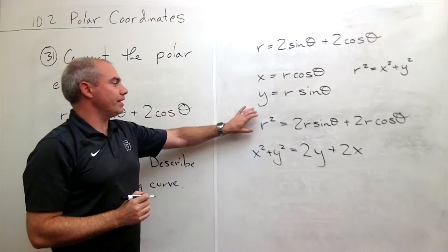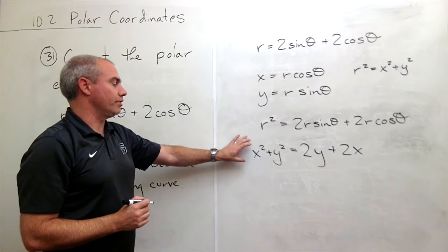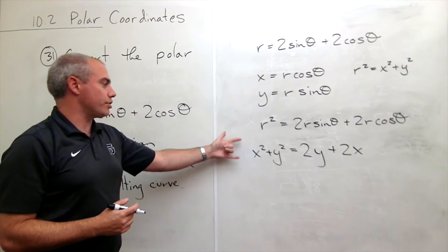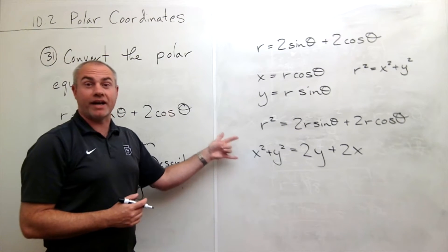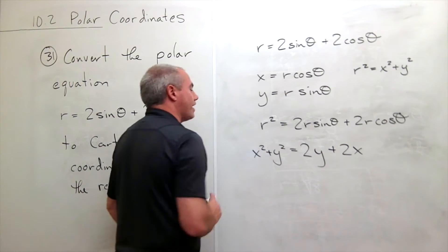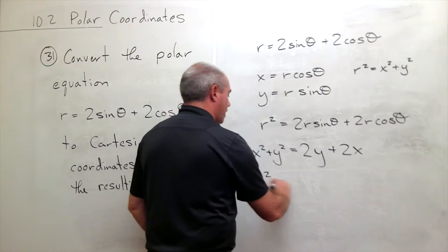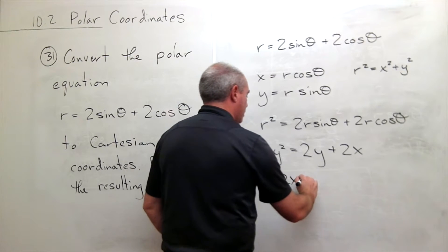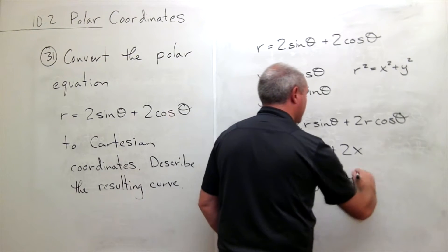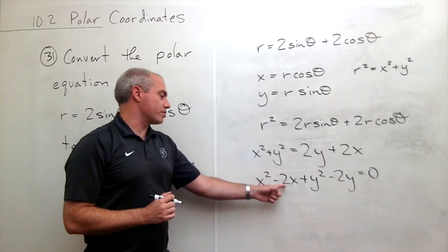I've changed everything that I had here that was polar into Cartesian. Now I could just clean this up a little bit so that I could actually see what kind of a curve this is. So what I'm going to do is let's move the x's and the y's over to the other side and I get x squared minus 2x plus y squared minus 2y equals 0. If I wanted to, I could complete the square on this.